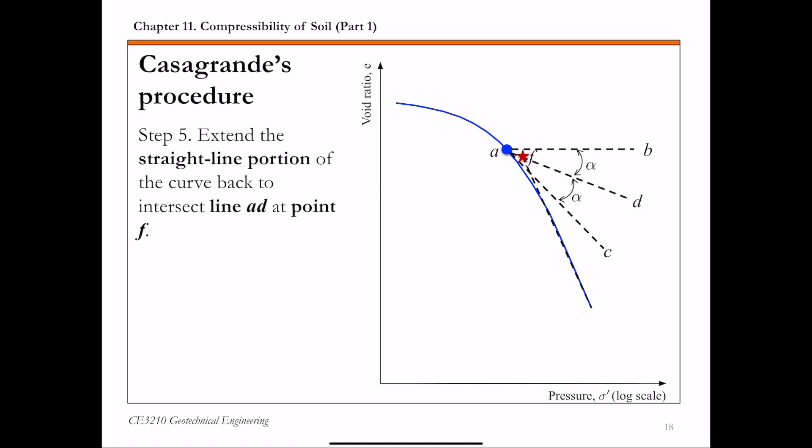The next step is to extend the straight line portion of the loading curve back to intersect line AD, and this intersection point we call point F. This intersection point F gives us the best estimate of the pre-consolidation pressure sigma c prime.